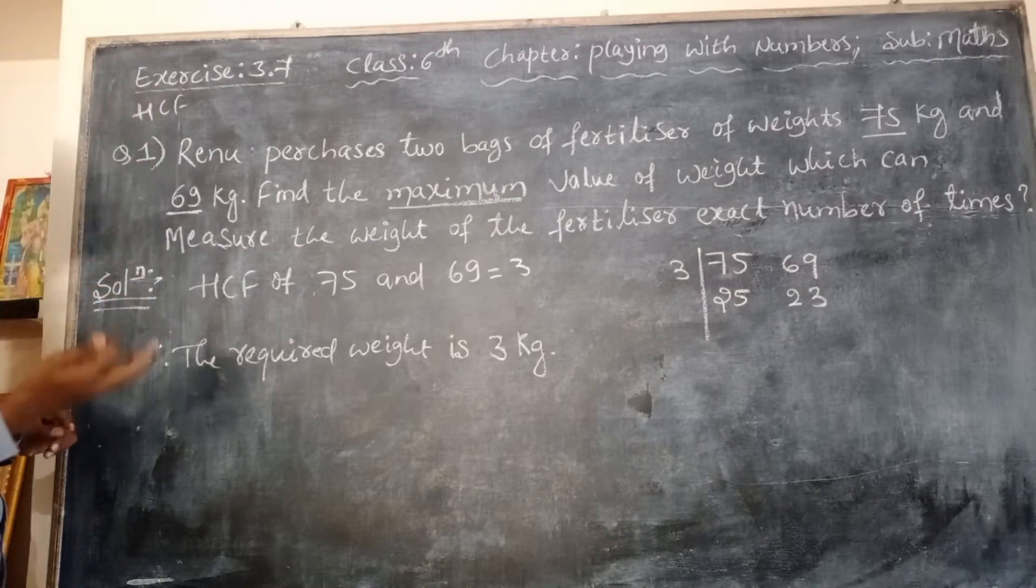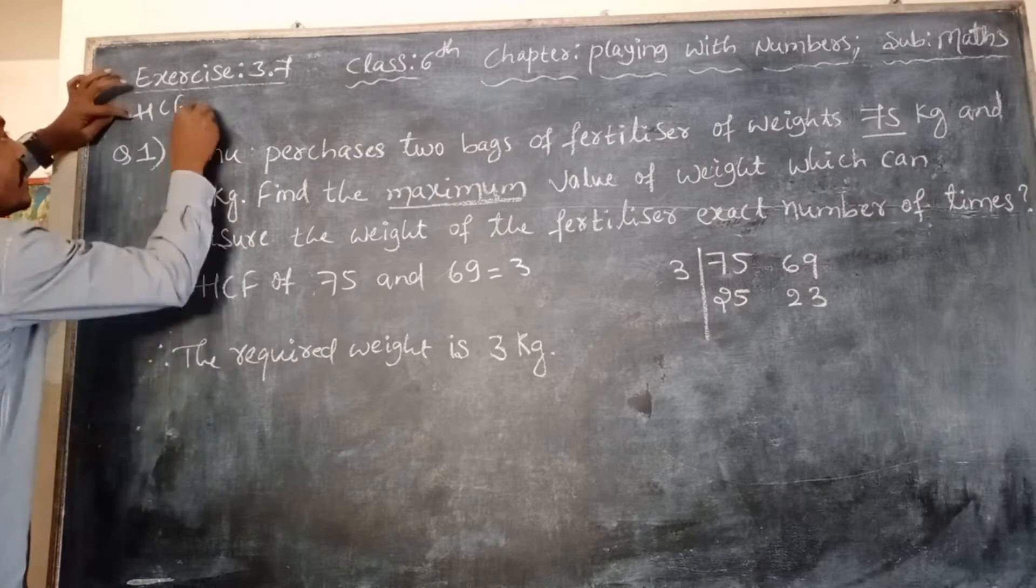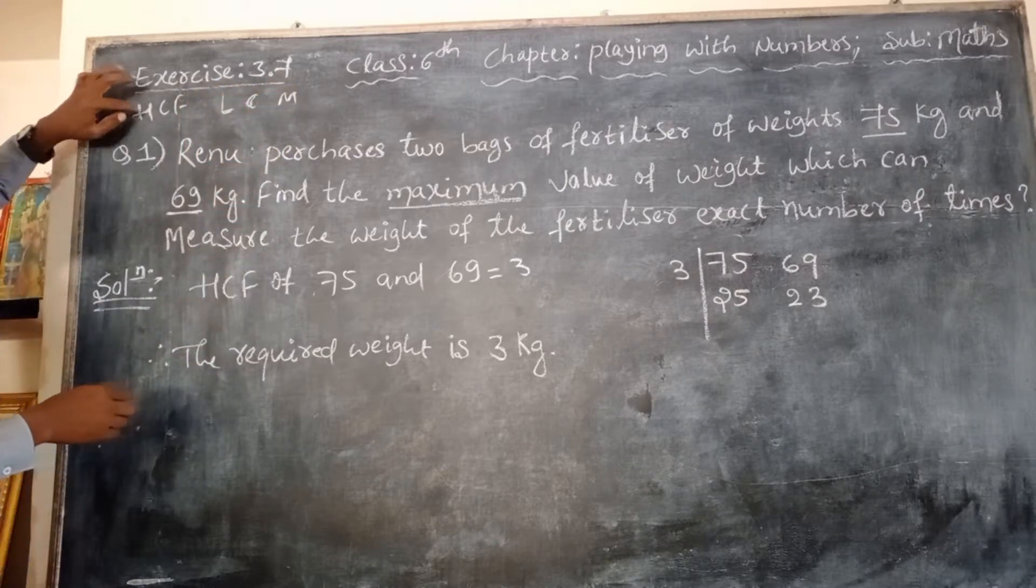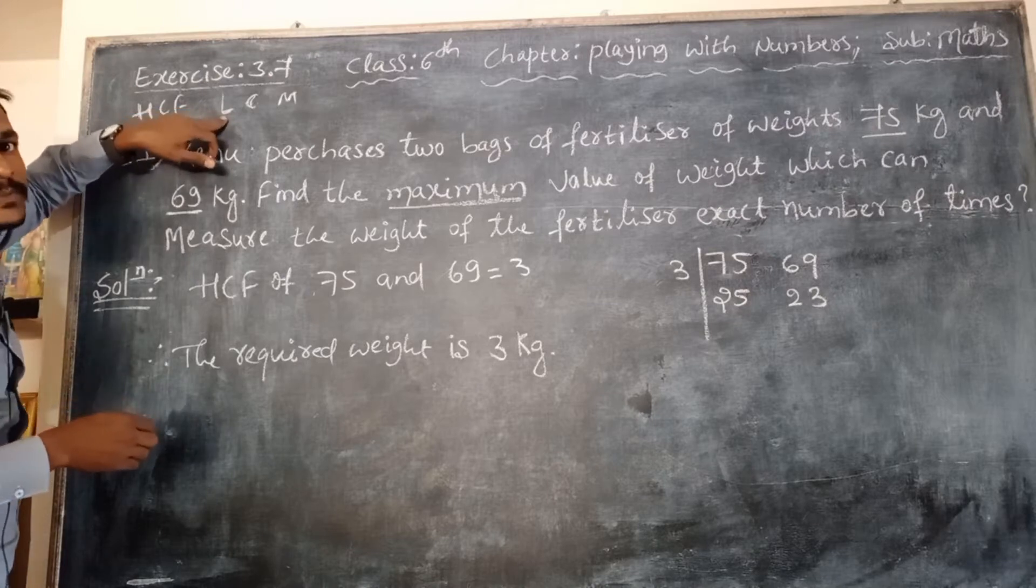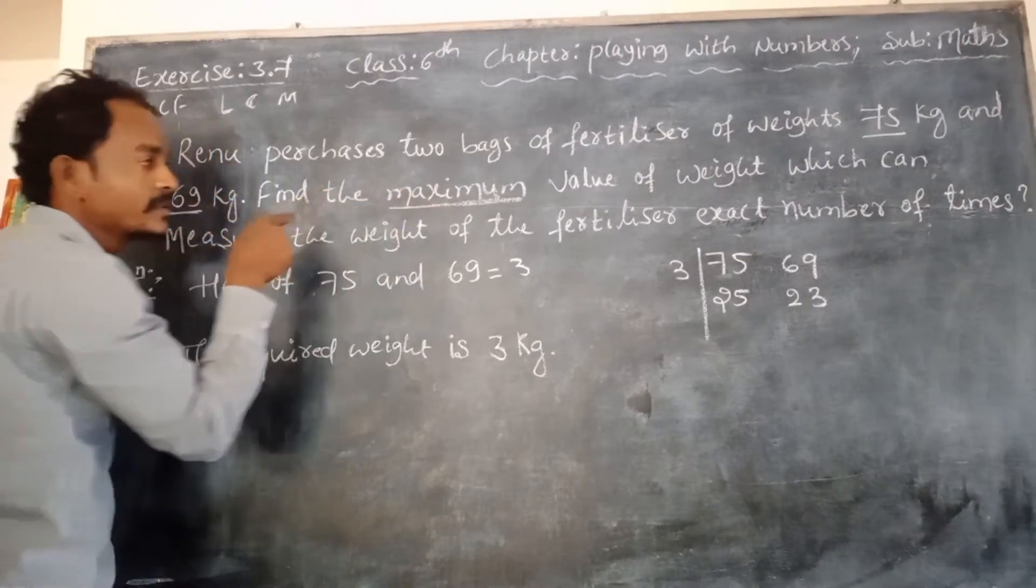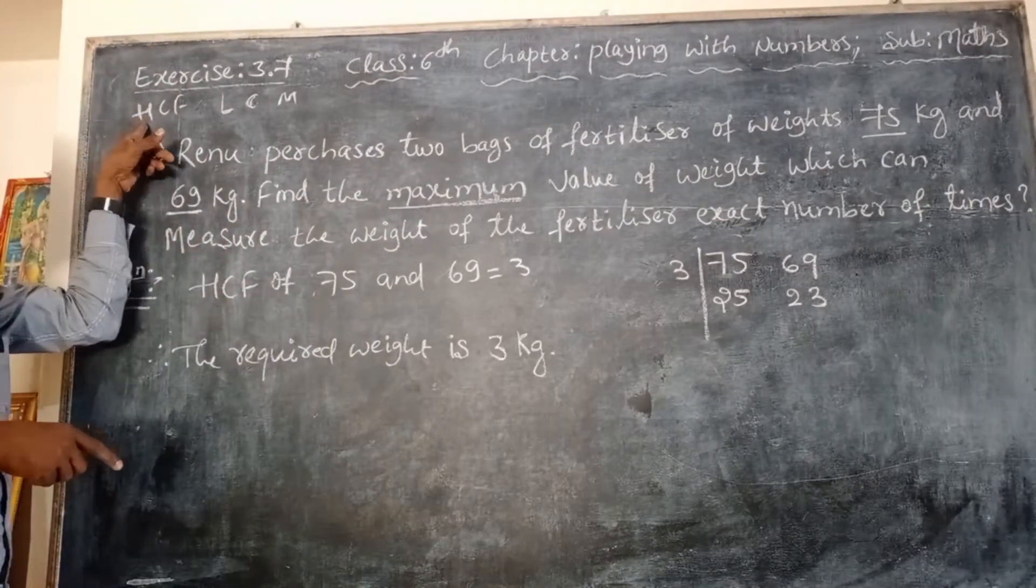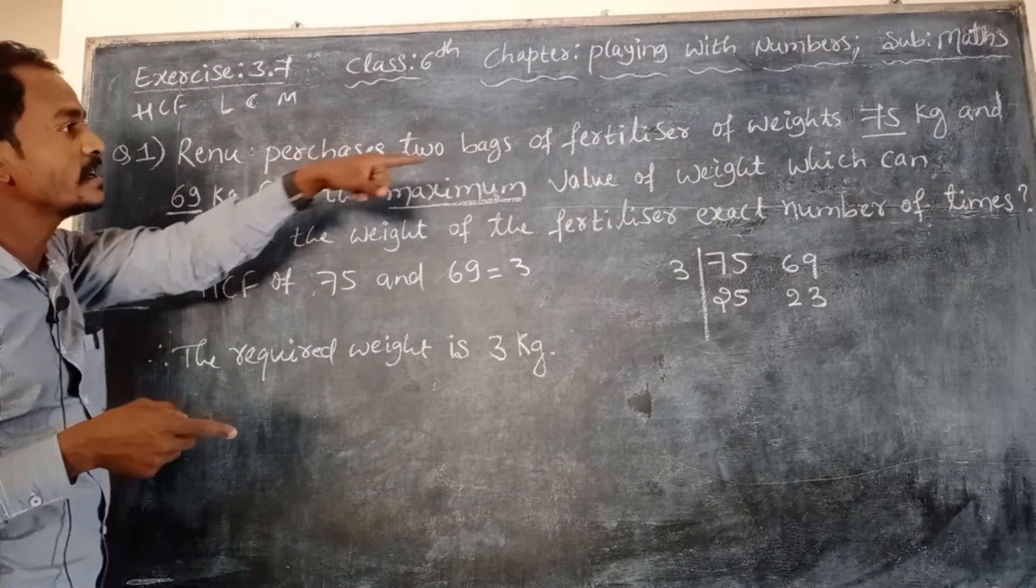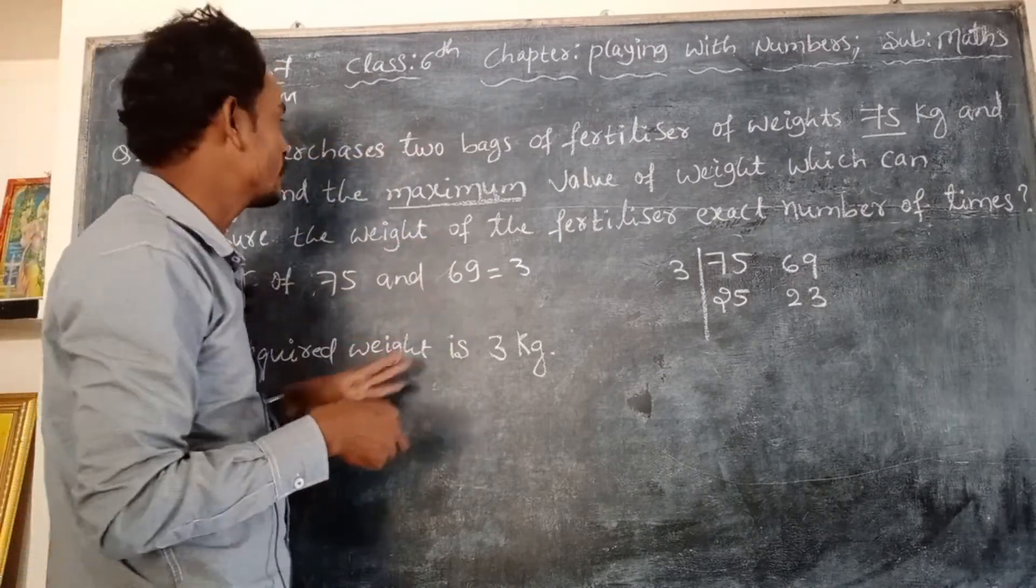H means highest. Highest means what? Maximum. Then LCM - L means lowest. Lowest means minimum. So when in the problem the word maximum is there, just you have to find HCF. Minimum is there, just you have to find the LCM of the given numbers.